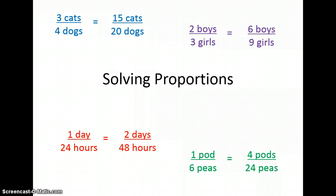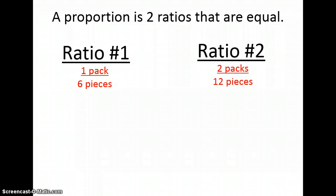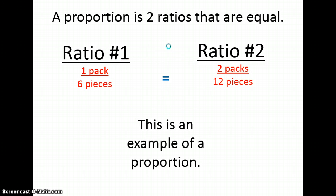Here are some examples of proportions. A proportion is two ratios that are equal. Let's look at ratio one and ratio two. We want to know, are these two ratios equal? We can say one to six is a fraction, and two to twelve can be written as a fraction. Basically, they should be multiplicative in nature. So six times two equals twelve, and one times two equals two. Therefore, I can say that this is an example of a proportion, because these two ratios are equivalent.